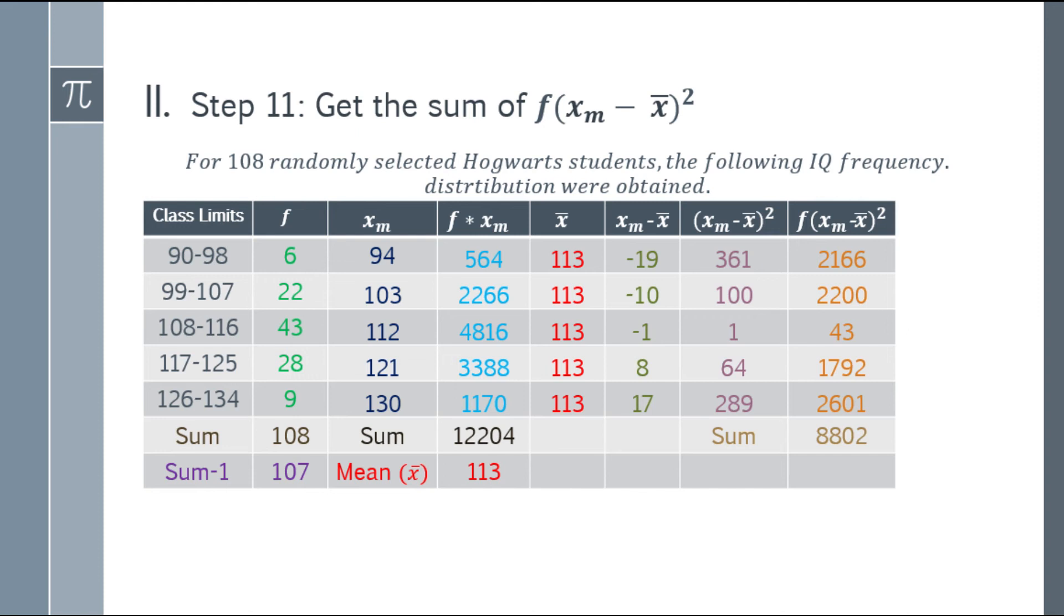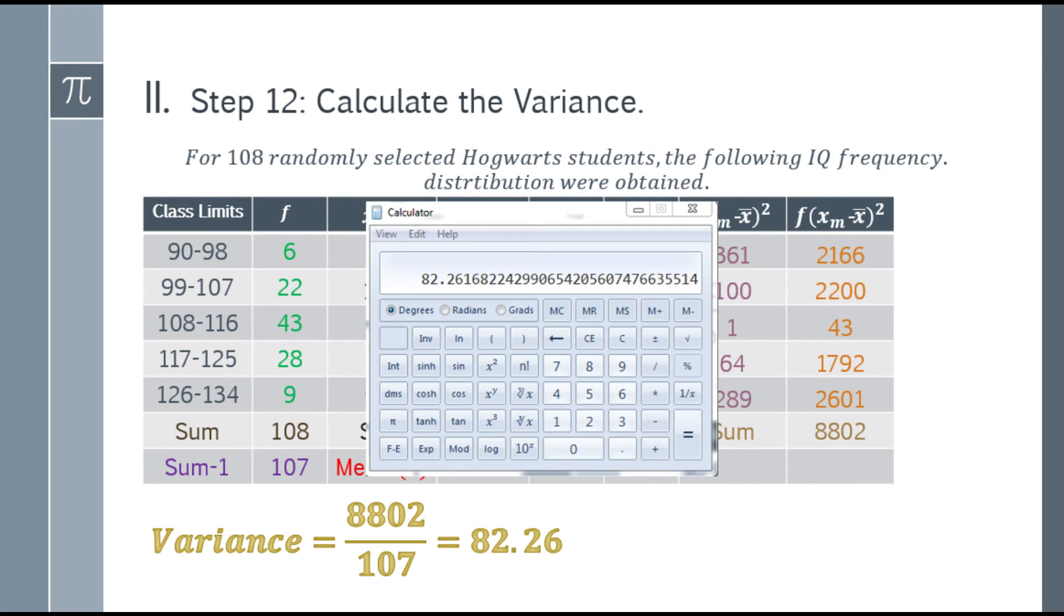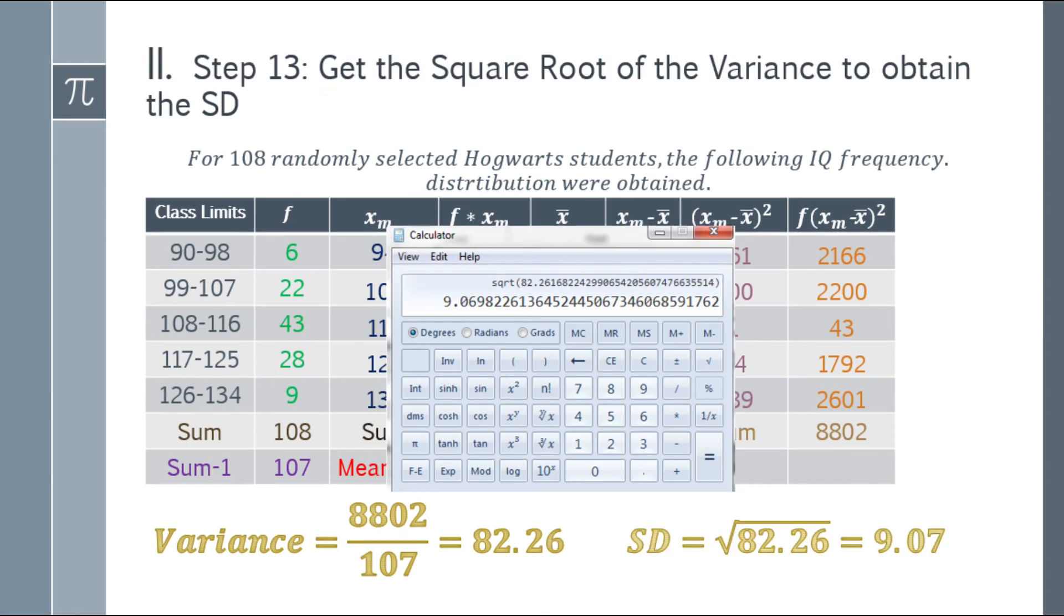Step 11: Get the sum of the new column. So 2,166 plus 2,200 plus 43 plus 1,792 plus 2,601, and the final answer will be 8,802. Step 12: Calculate the variance. How do we get the variance? Remember, the sum of the new column is 8,802. We divide it by sum minus 1, which is in purple, 107. So we don't divide by 108, we divide by 107. That will be 82.26.